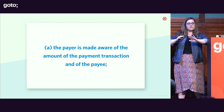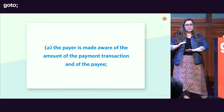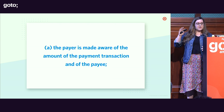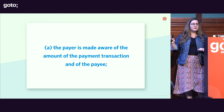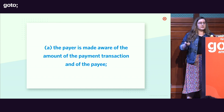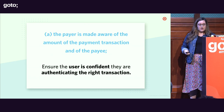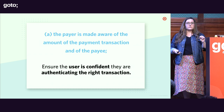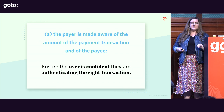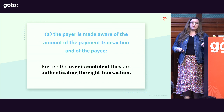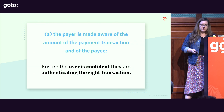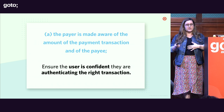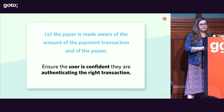The legislation doesn't actually specify how to make the payer aware — it can be displayed on the payment interface itself, in the web browser, or in a mobile application. The goal is to ensure the user is confident they are authenticating the right transaction, so they don't accidentally send $7,000 to someone they were only trying to send $7 to. This protects consumers but also protects the business itself from making mistakes on behalf of the customer.